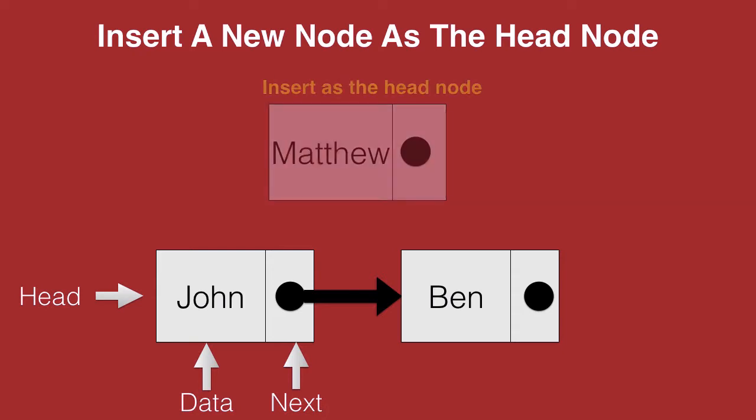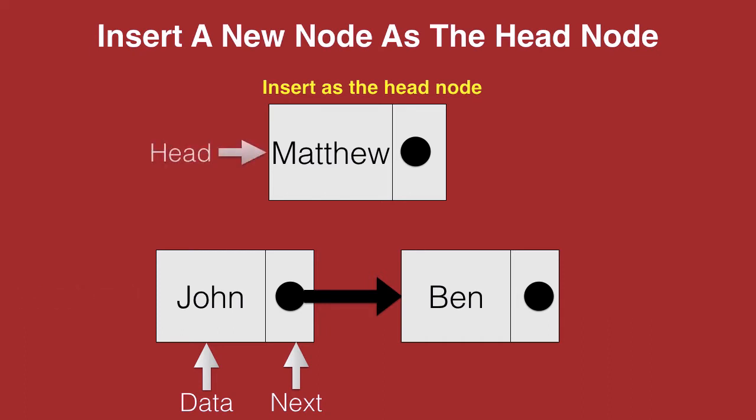Now we are trying to insert a new node into this list with the data Matthew. The condition is Matthew needs to go in as the head node. Now a solution for this could be we can remove John as the head node and make Matthew as the new head node.